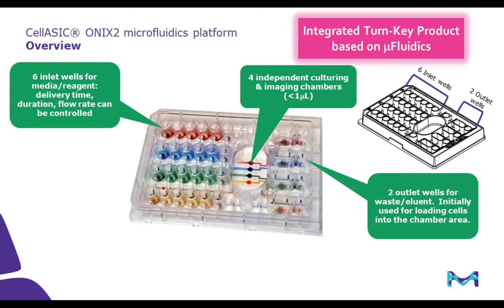The plate has a standard 96-well footprint. The image in the center shows one of our plates preloaded with colored dye to show the individual layout of the fluidics. As you can see, the plate is divided into six inlet wells on the left side and two outlet wells on the right side, connected to the central tissue culture chamber area. Each of these inlet wells are connected via microfluidic channel to the central tissue culture chamber, where cells are grown and imaged. There is then an exit channel where waste and used media from the cell chamber will be delivered to the outlet wells.